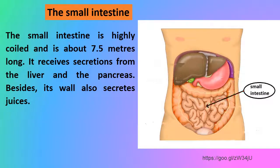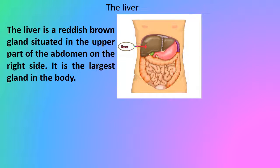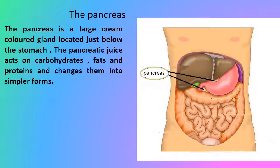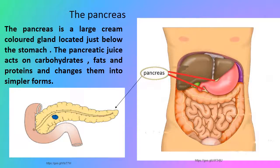After the stomach, food enters the small intestine. The small intestine is highly coiled and is about 7.5 meters long. It receives secretions from the liver and the pancreas, and its walls also secrete juices. The liver is a reddish-brown gland situated in the upper right part of the abdomen — it is the largest gland in the body. It secretes bile juice stored in the gallbladder; bile plays an important role in the digestion of fats. The pancreas is a large cream-colored gland located just below the stomach. Pancreatic juice acts on carbohydrates, fats, and proteins, changing them into simpler forms.